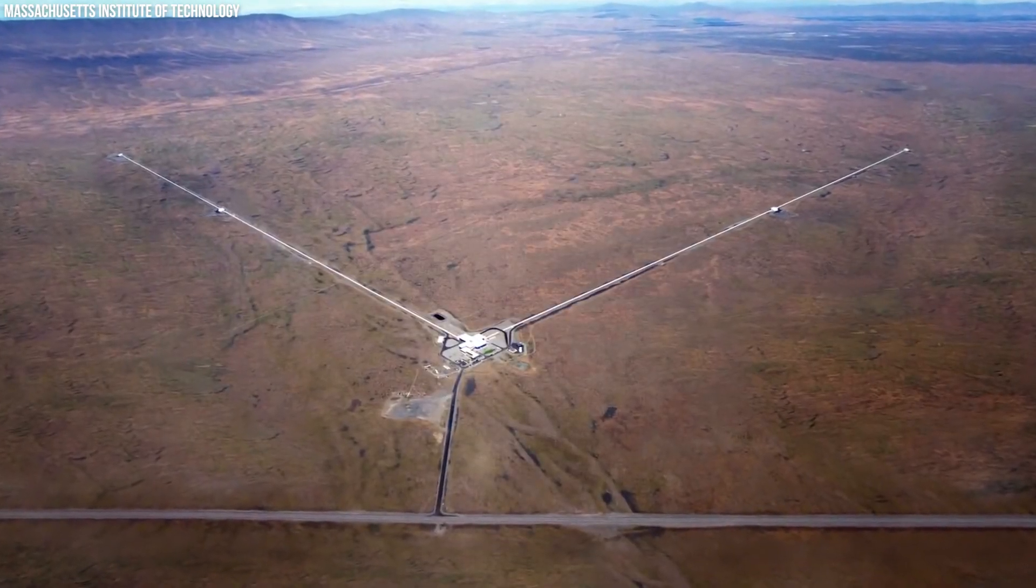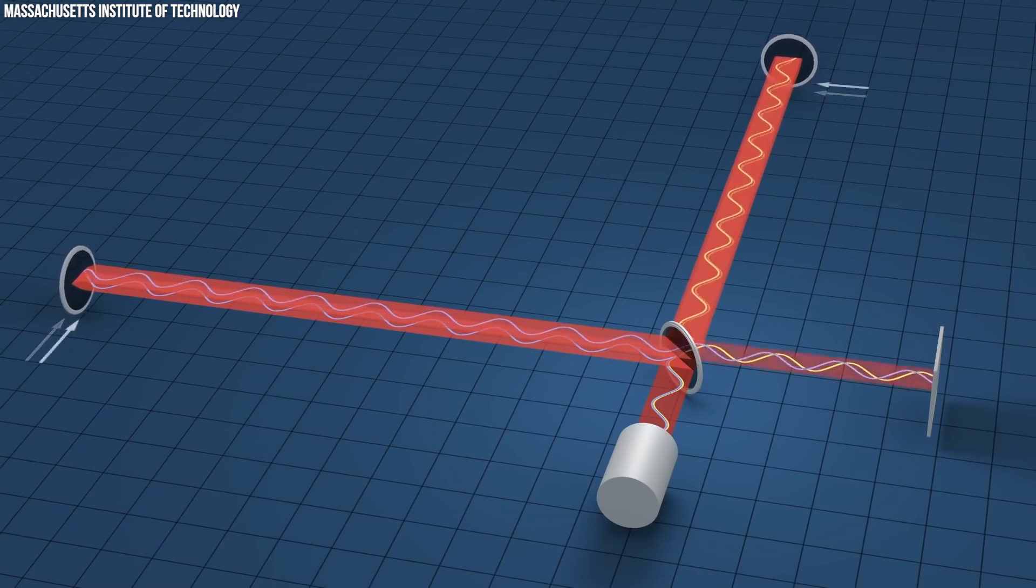Picture LIGO detecting the thunderous crash of symbols from intense events like collisions, while the NanoGrav low-frequency gravitational wave signal captures a subtle background harmony, akin to the gentle hum of violins.